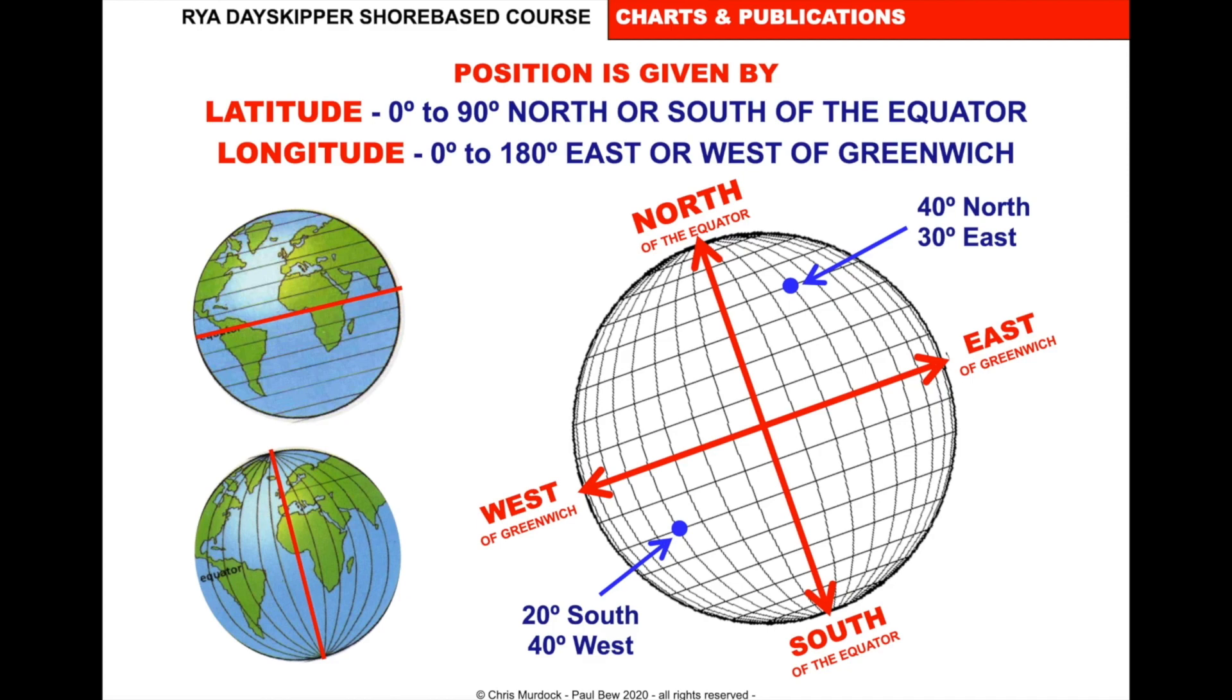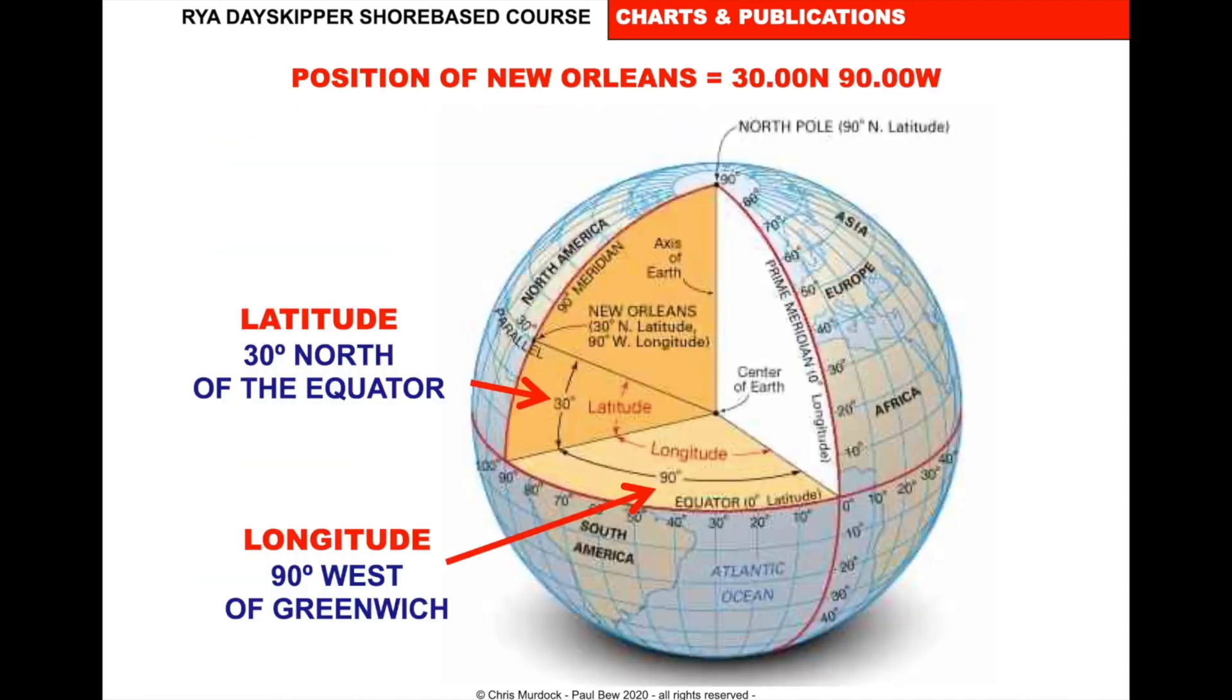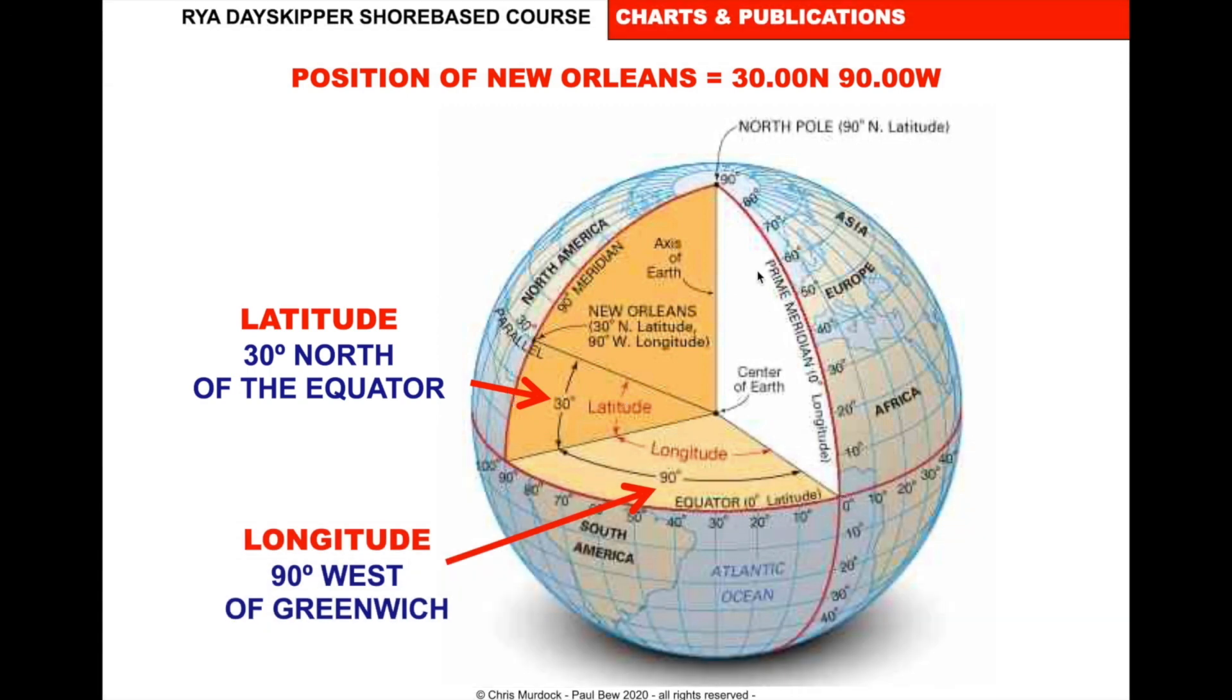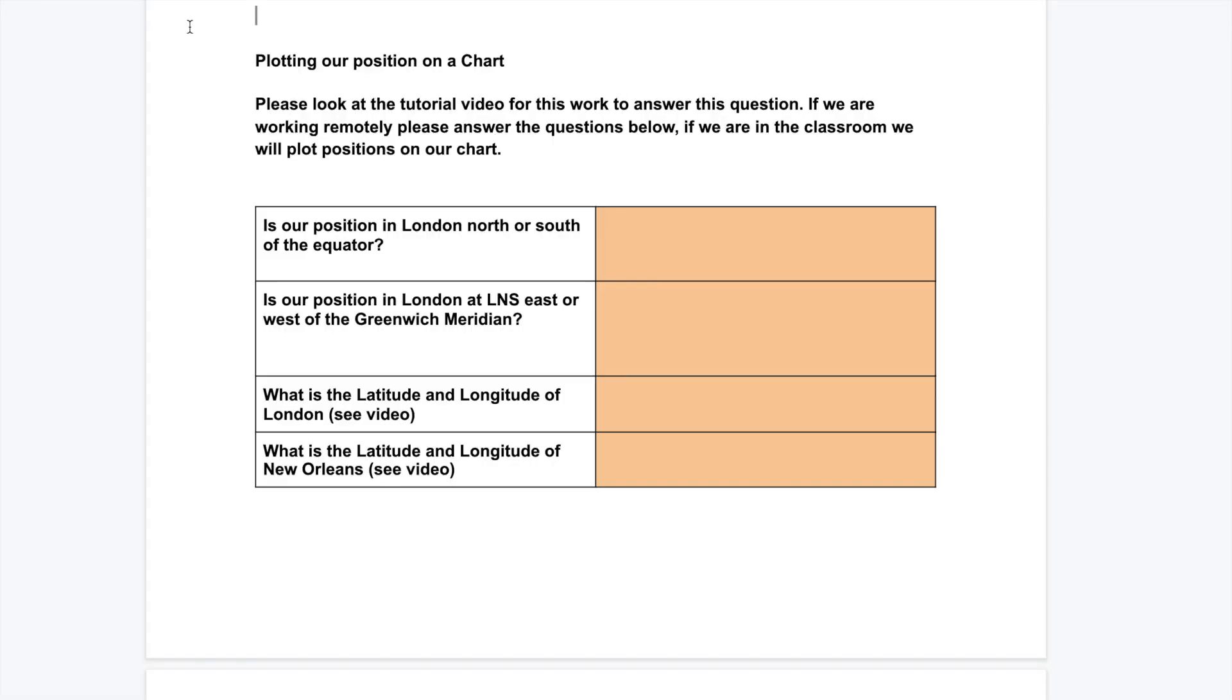So the position is given by latitude and longitude. Latitude is measured 0 to 90 degrees north or south of the equator, which we've said. And the longitude is measured 0 to 180 degrees east or west of Greenwich. So now we have a grid system. We can work out our position anywhere in the world, north or south of the equator or east and west of Greenwich. So if we look at the position here of New Orleans, which is 30 degrees north and 90 degrees west, we can go 30 degrees north of the equator on the line there and then we'll go 90 degrees west from the Greenwich Meridian and where these two meet will be the position of New Orleans.